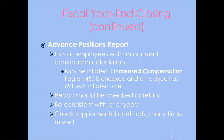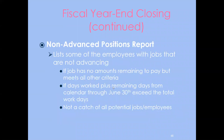The Advanced Positions report lists all employees with accrued contribution calculations for summer months. Note that if the increased compensation flag on payroll item 450 or 691 is checked, the rate may be inflated — review very carefully. The report should be consistent with prior years except for new employees. Double-check any contracts being accrued over the summer to make sure none are missed. The Non-Advanced Positions report lists all employees not advancing — review to make sure no one is on it who should be advancing.